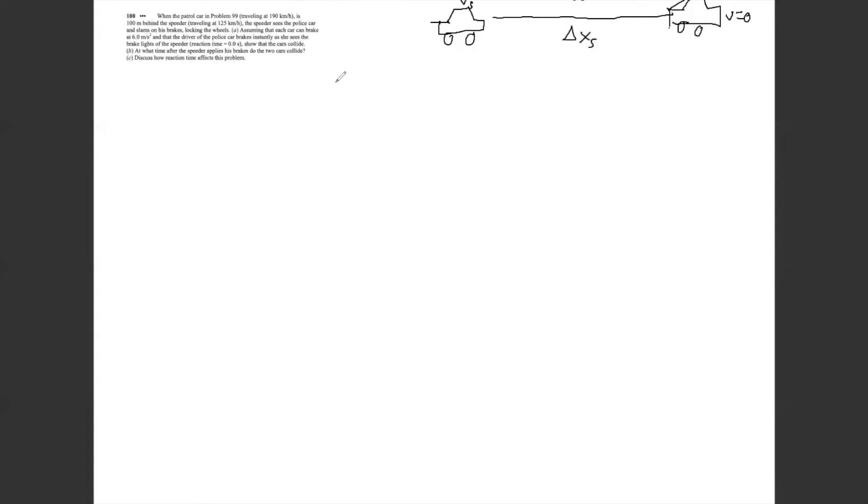And behind the speeder we have our police car, and I'm drawing it down here on a different level. It's really right behind it, but I'm just drawing it below to provide a little space so our drawing doesn't get too cluttered. And I'll go with VM, V max, just to follow along with the same terminology from the previous problem.